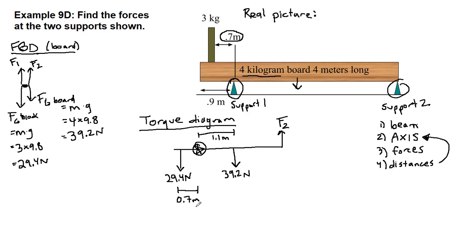And then the last one here, from one support to the other support, it's not the full 4 meters of the board itself. The 0.9 is the distance from the edge to the support one. And the remaining 3.1 meters is the distance between these two supports. So 4 minus 0.9 is 3.1 meters.